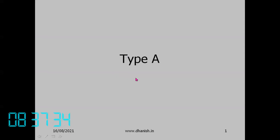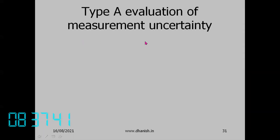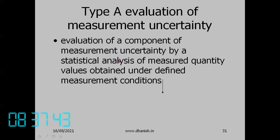First is Type A evaluation. The definition is: evaluation of a component of measurement uncertainty by a statistical analysis of measured quantity values obtained under defined measurement conditions.